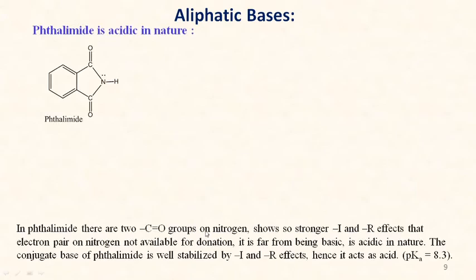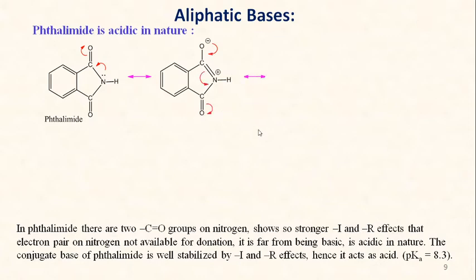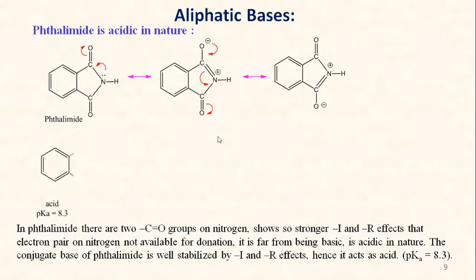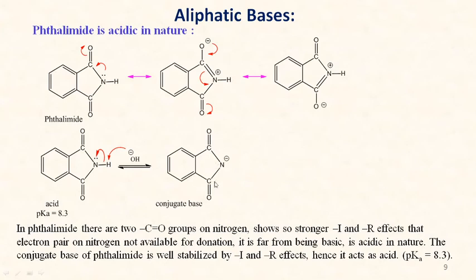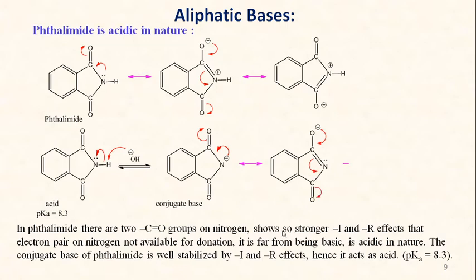If we consider phthalimide, it is acidic in nature. Though it contains an NH group, two strong electron-withdrawing groups show strong electron-withdrawing inductive as well as resonance effects; the lone pair is delocalized and not available for donation at all. Therefore it cannot act as a base but acts as an acid with pKa value 8.3. When it donates a proton, it gives a conjugate base that is well stabilized by electron-withdrawing inductive and resonance effects; therefore phthalimide is acidic in nature.